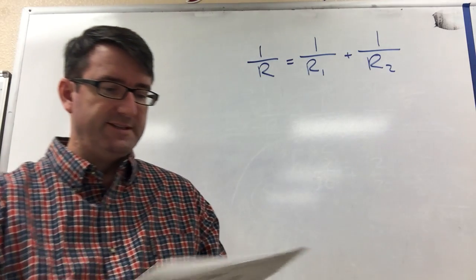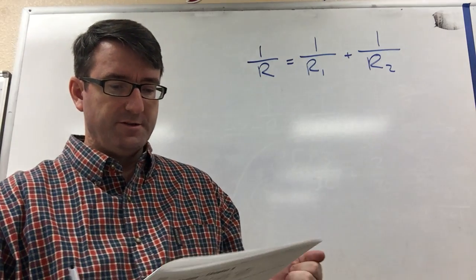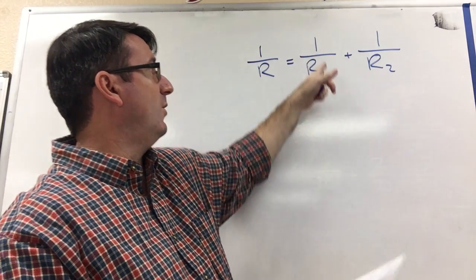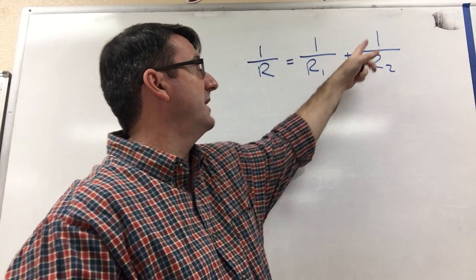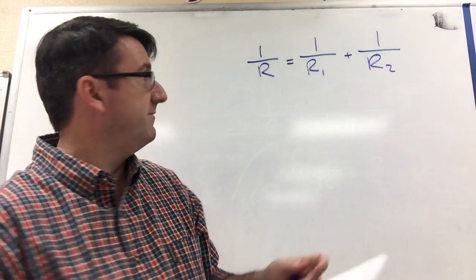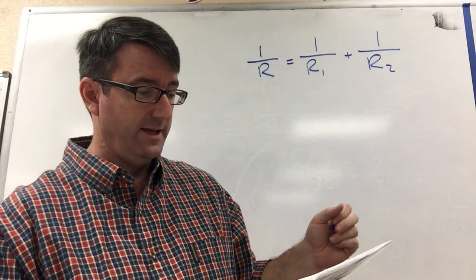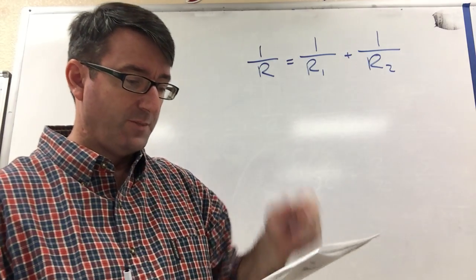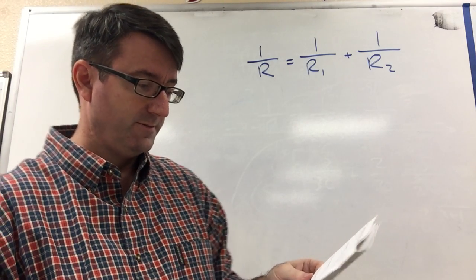Number 12, the resistance R of a circuit is given by this equation: 1 over R is equal to 1 over R sub 1 plus 1 over R sub 2. Find R if R sub 1 is 10 ohms and R sub 2 is 15 ohms.